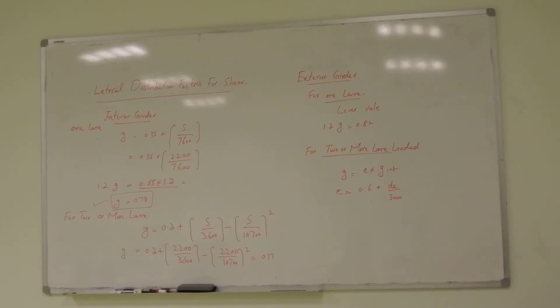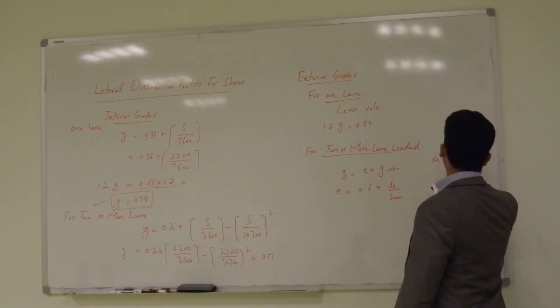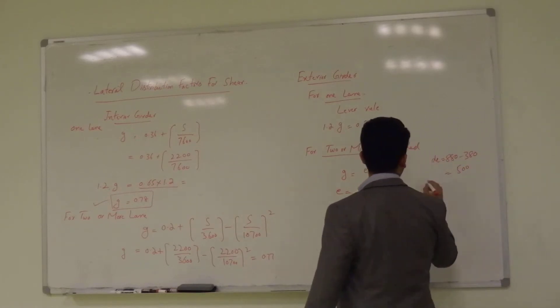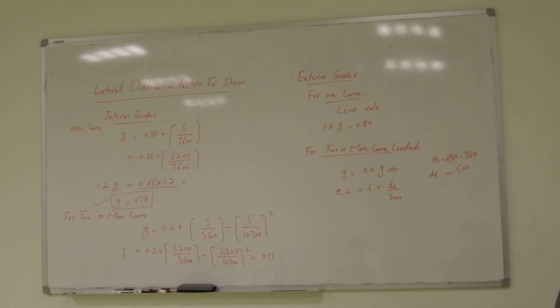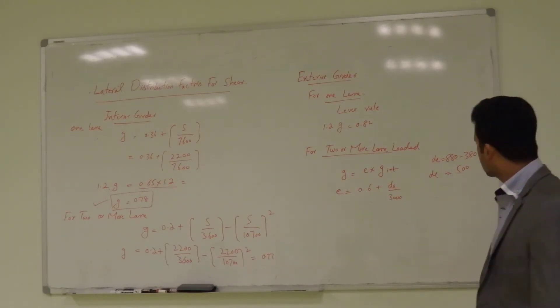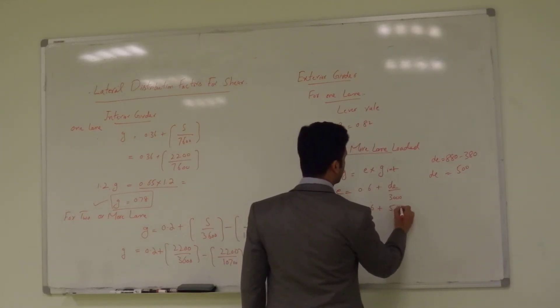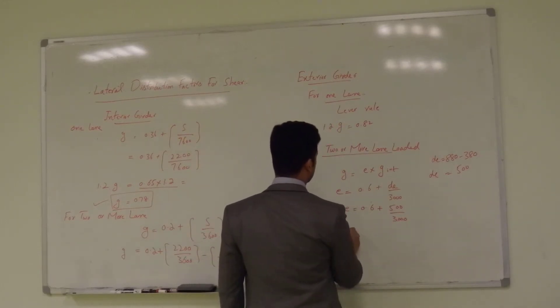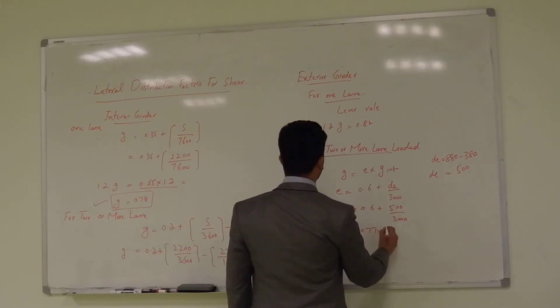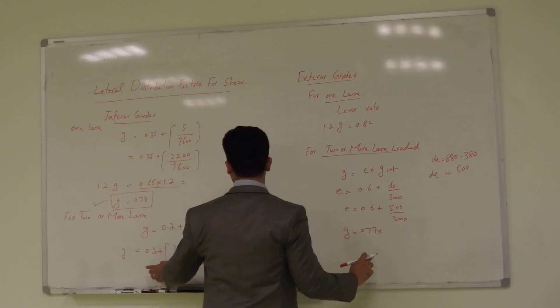80 minus overhang minus barrier. It is 500. So, d_e is 500 and this d_e it should be how much? How much is this e? 0.72. 0.75.